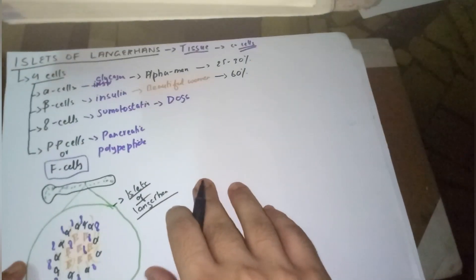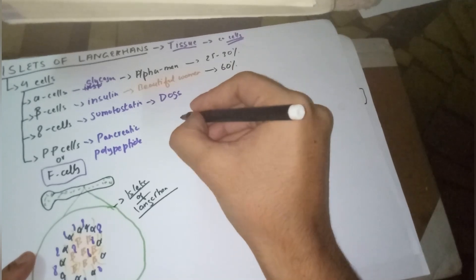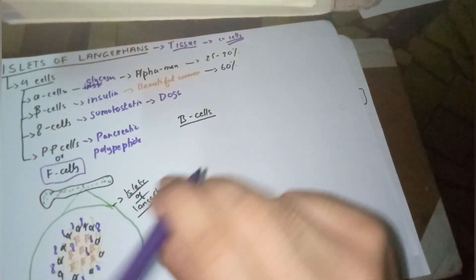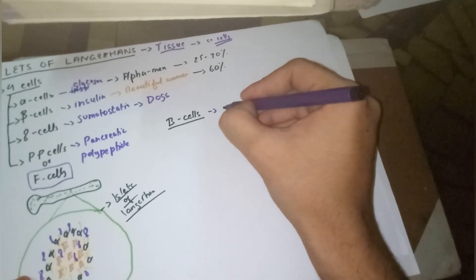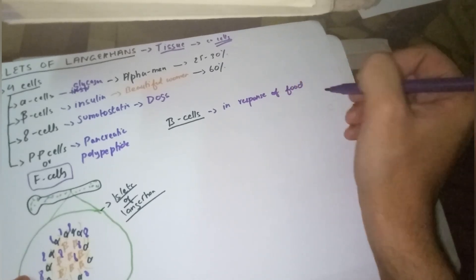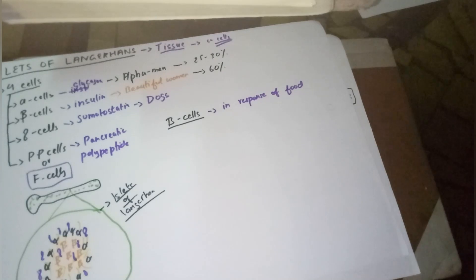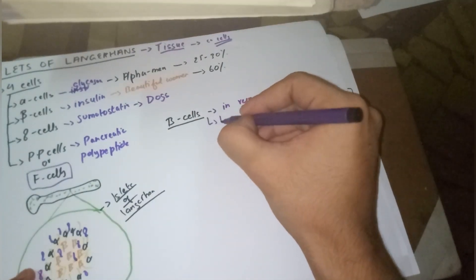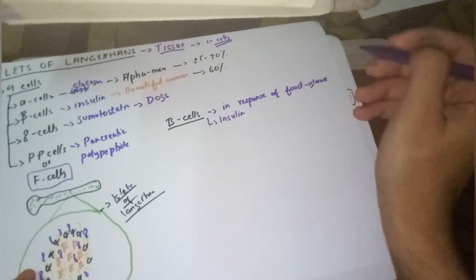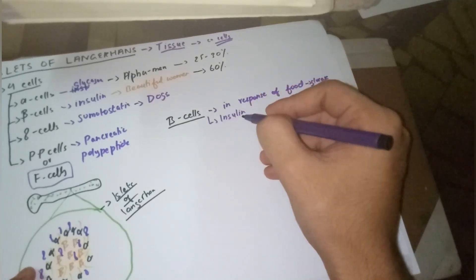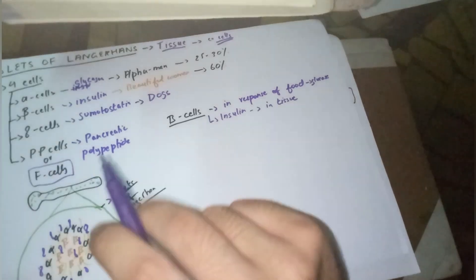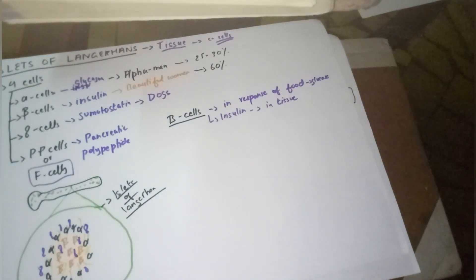Now let's discuss their functions. The beautiful women — beta cells — are activated in response to food. When we eat something, glucose comes in and insulin is secreted. Insulin carries glucose into the tissues — everywhere except the brain — where it is utilized, preventing accumulation.